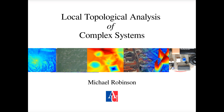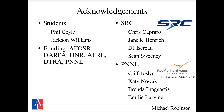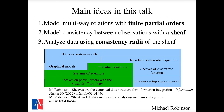This talk describes how you can analyze topological systems built on sheaves using something called the consistency radius. The main ideas are that you should model multi-way relations between data items using finite partial orders instead of something like a graph or even something as general as a topological space. Finite partial orders are a little easier to work with.